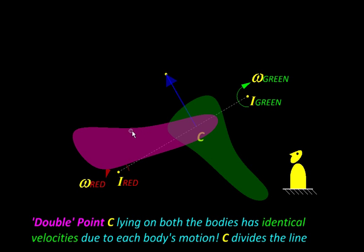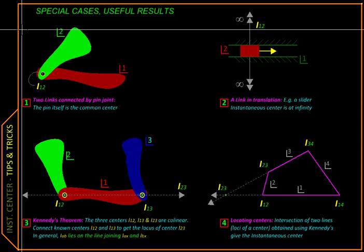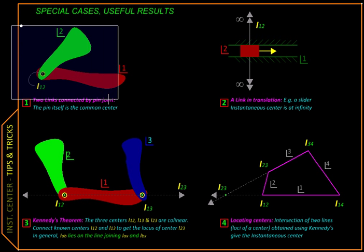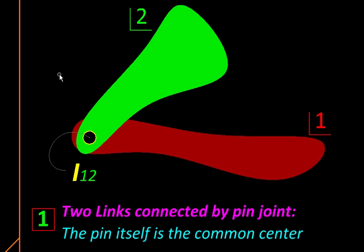Here are some useful results, special cases, and the notation that we will be using for relative centers. Suppose we have two bodies or two links, number one and number two, and they're connected to each other with a revolute pair. Then that pin joint itself becomes the relative center of the two, because one body will be rotating relative to the other with that pin as the center.